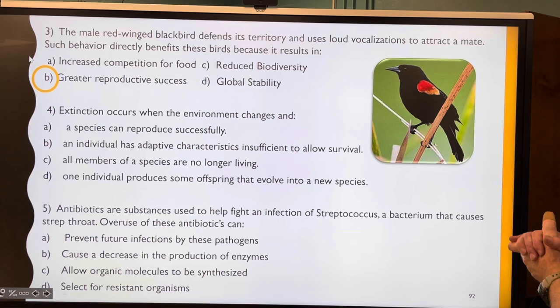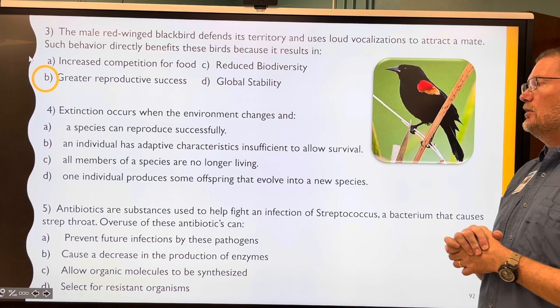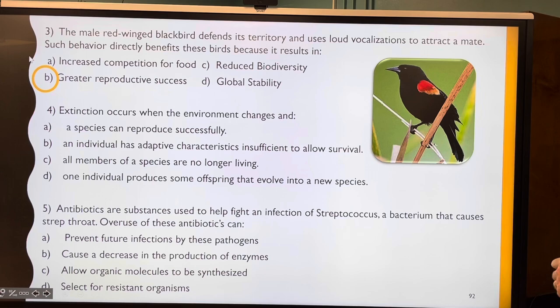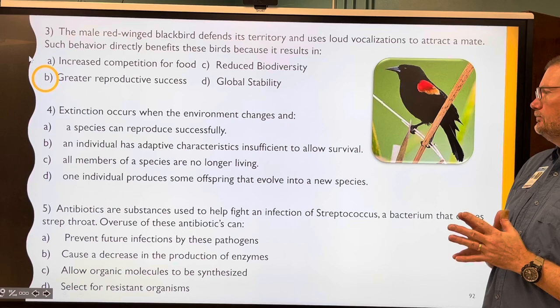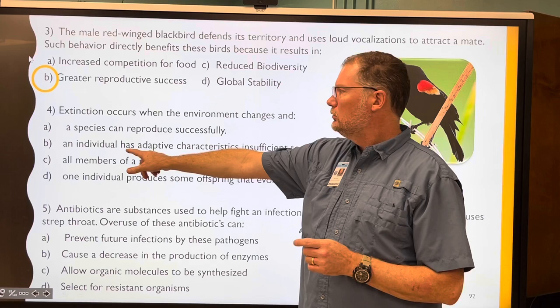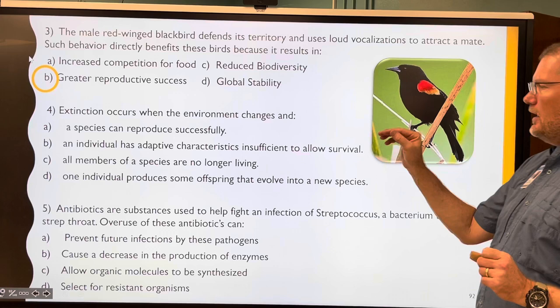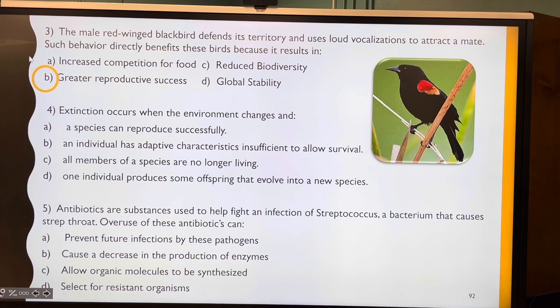Extinction occurs when the environment changes and what else? The options: a species can be produced successfully — doesn't make sense; an individual has adaptive characteristics insufficient to allow survival — possible, but remember extinction refers to a species, not an individual. So the correct answer is C: all members of a species are no longer living. An individual dying is not extinction.